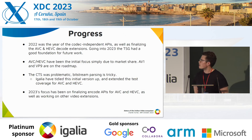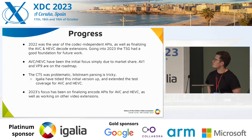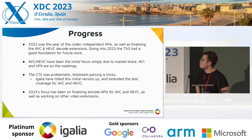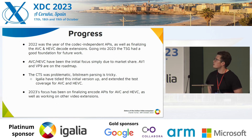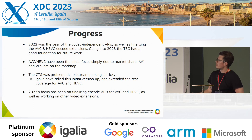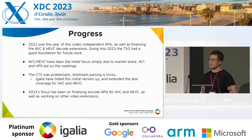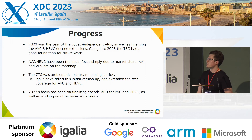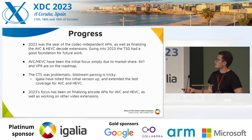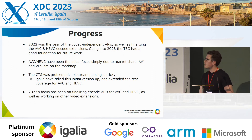2022 was the year of finalizing the codec-independent APIs — building a really solid foundation to add further codecs and other extensions. Going into 2023, we had this good foundation: AVC and HEVC decode was finalized and shipped. The focus there was simply due to the market share of those codecs, nothing particularly philosophical. AV1 is in active development right now, and VP9 is on the roadmap.